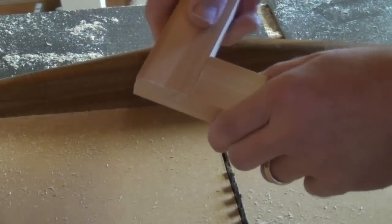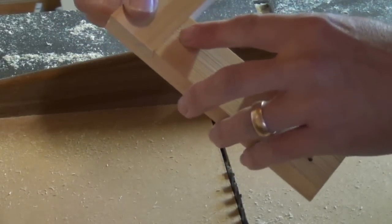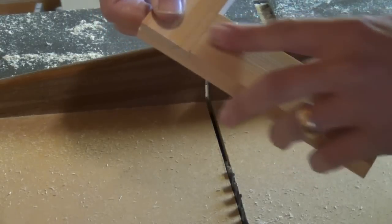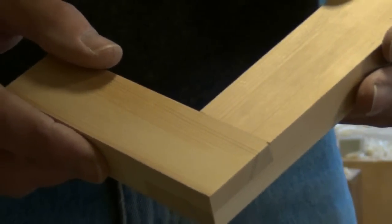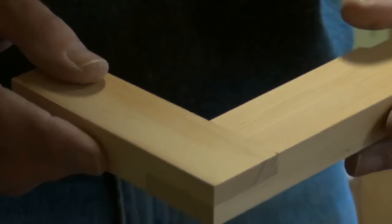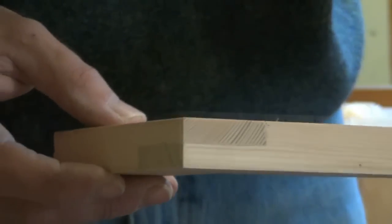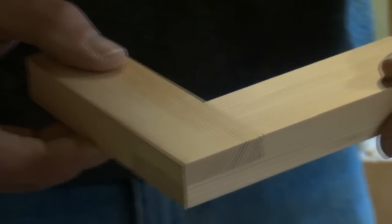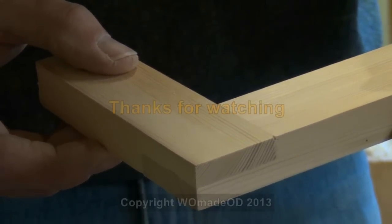And the result is a lovely joint, nice tight joint lines and nice and flush. So I'll glue that up. After a few strokes of the plane, there we have a lovely half lap joint: super tight, lovely and flush, and without measuring anything. Next time you need a half lap joint, why not give this method a go?